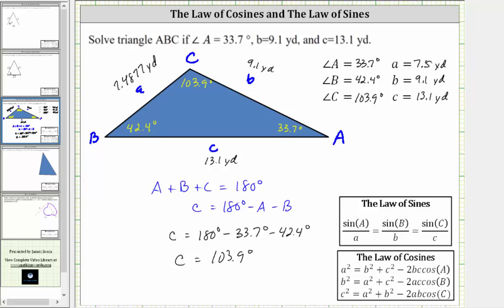Before we go, one quick check: the longest side should be opposite the largest angle and the shortest side opposite the smallest angle. The longest side of 13.1 yards is opposite the largest angle of 103.9 degrees, and the shortest side of approximately 7.4877 yards is opposite the smallest angle of 33.7 degrees. I hope you found this helpful.